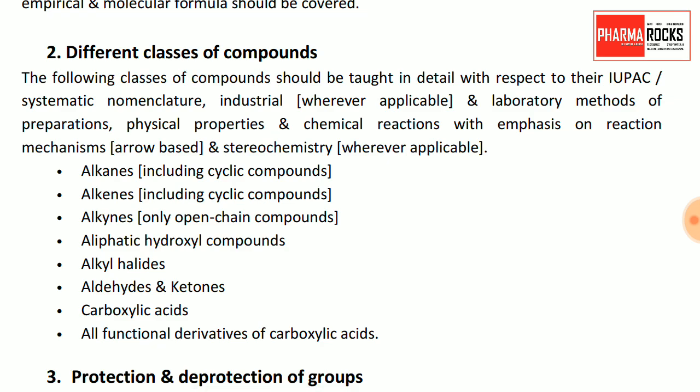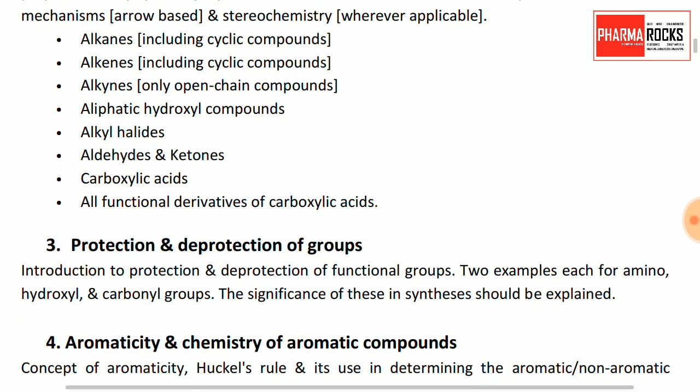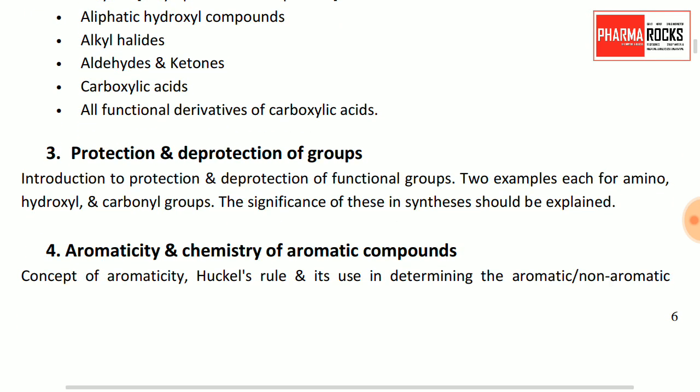Next is different classes of compounds — very important. Their IUPAC nomenclature, systematic nomenclature, industrial and laboratory methods of preparation of alkanes, alkenes, alkynes, aliphatic hydroxyl compounds, alkyl halides, aldehydes and ketones, carboxylic acids and all functional derivatives of carboxylic acids. Then protection and deprotection of functional groups.